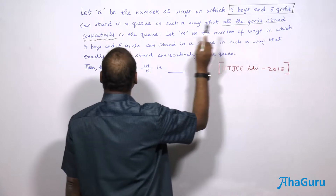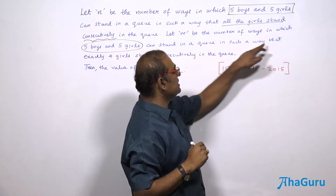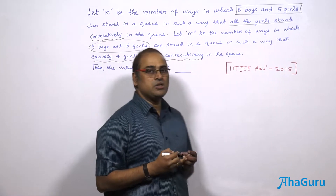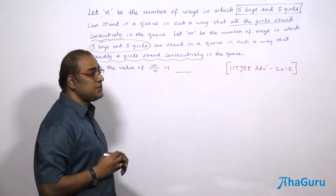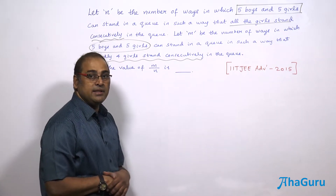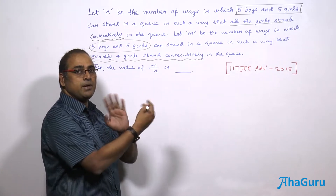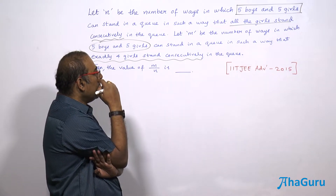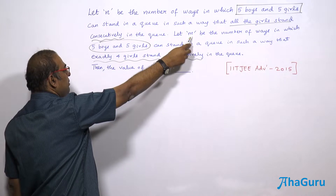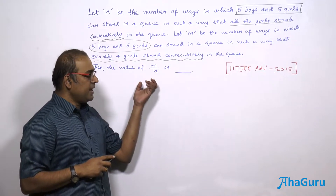Let M be the number of ways in which the same 5 boys and 5 girls can stand in a queue such that exactly 4 girls stand consecutively. Exactly 4 girls means you have 4 girls and the neighbor of that group should be a boy, not a girl. Otherwise there will be 5 girls consecutive. So the fifth girl is present in some other position. What we want is the value of M by N, asked in JEE Advanced 2015.